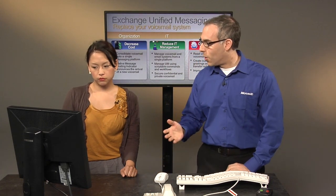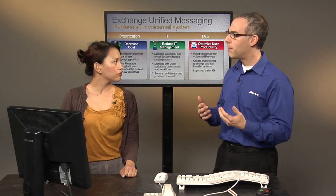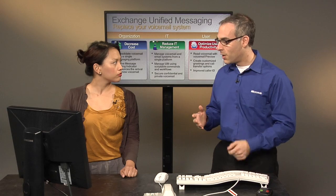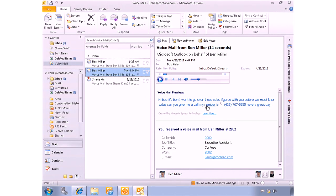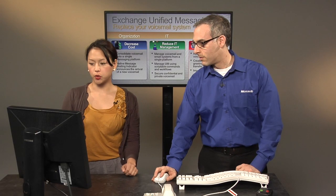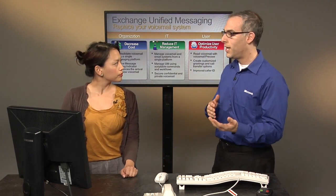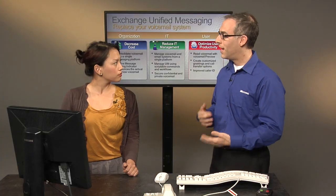Not only that, but if it's a long message — like a 10 or 15-minute message — and there's a part that maybe wasn't clear or the transcription didn't get exactly right, you can actually click on that particular area and jump straight to it. So you can jump straight to the part you want to hear rather than listening to the whole message, speeding forward. It allows you to be much more productive and get to the information that really matters as quickly and easily as possible.